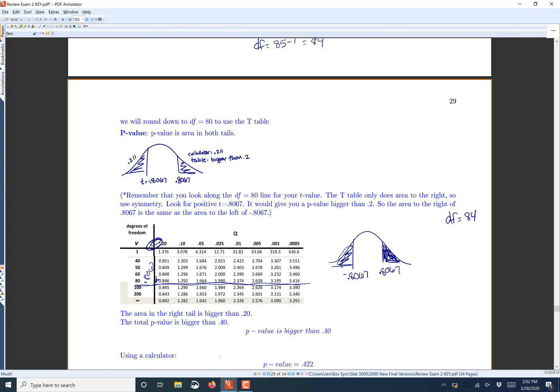Now the t-table is different. The t-values are always on the inside, and the probabilities are on the top. So we're looking for 0.8067. So the closest you're going to find is going to be over here to the left of this 0.8406, which means that the area is going to be somewhere bigger than 0.2. So from the table, all you can say is bigger than 0.2, which means this area is also bigger than 0.2.